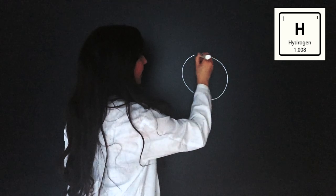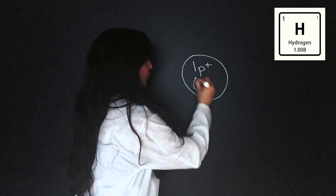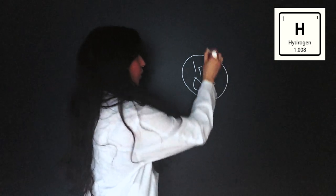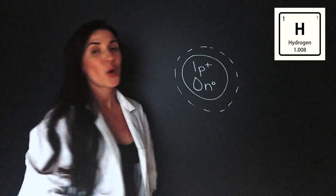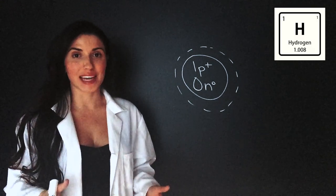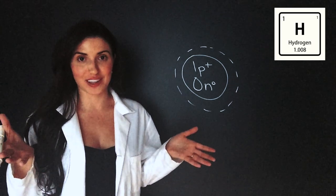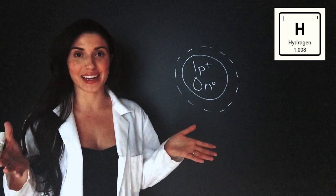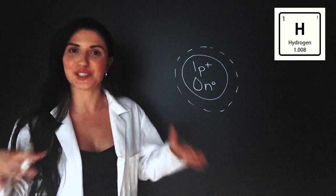Let's start with the most simple atom, hydrogen. We'll draw the nucleus. Hydrogen has one proton and zero neutrons. We'll draw the shell. When the atom is in the neutral state, we know that the number of protons is equal to the number of electrons. The protons are positive, the electrons are negative, and if they're the same number, they cancel each other out and the atom is neutral.